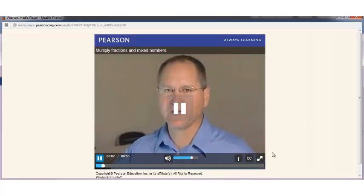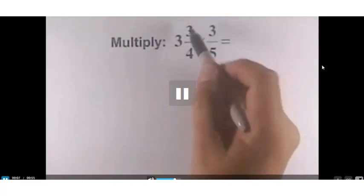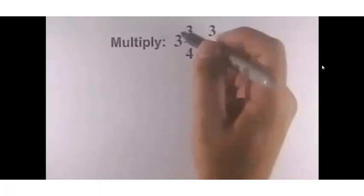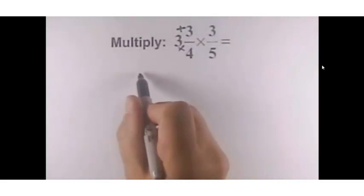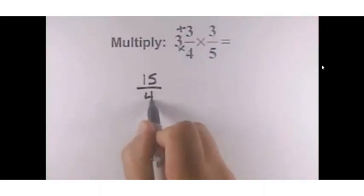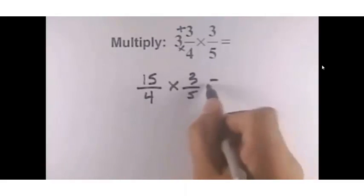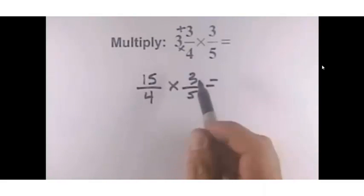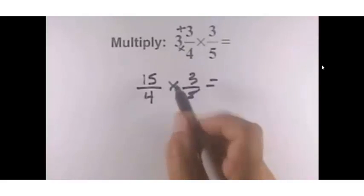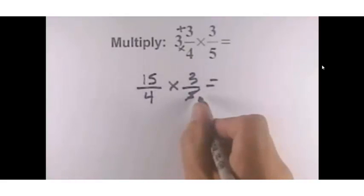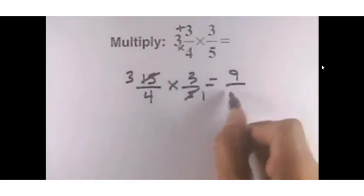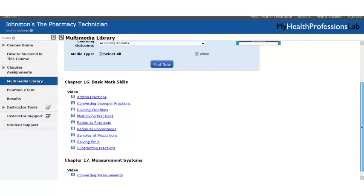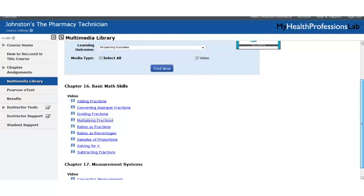When we multiply fractions and mixed numbers, we first need to convert the mixed number to an improper fraction. Remember the rule: multiply and then add. So 3 times 4 is 12, plus 3 is 15 — rewrite this as 15 fourths times 3 fifths. The next step is to reduce whenever you can: divide 5 and 15 by 5, reducing to 1 and 3. Simply multiply and you end up with 9 fourths. This is a really nice feature for students to get that extra reinforcement they may need in essential math skills.